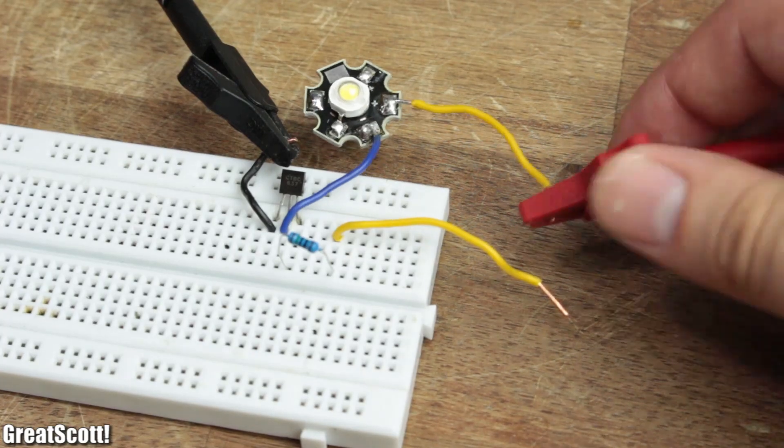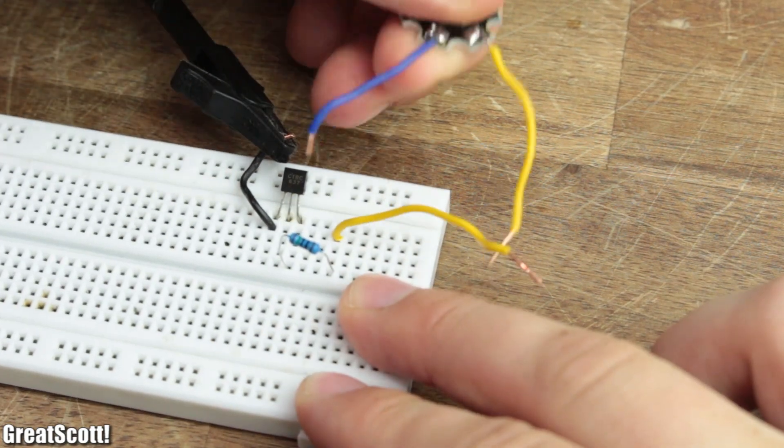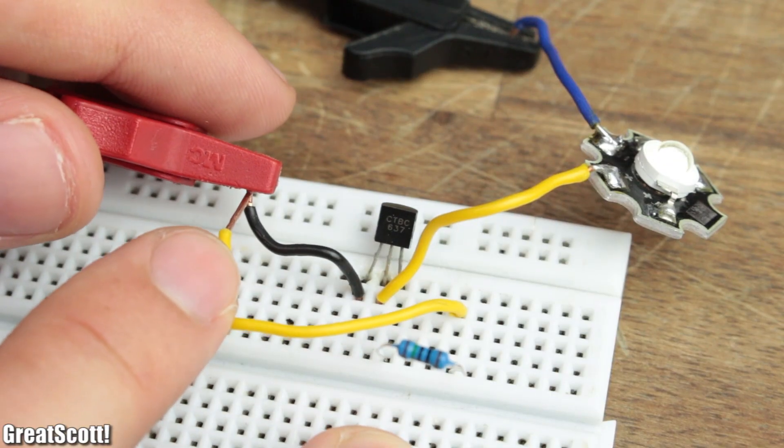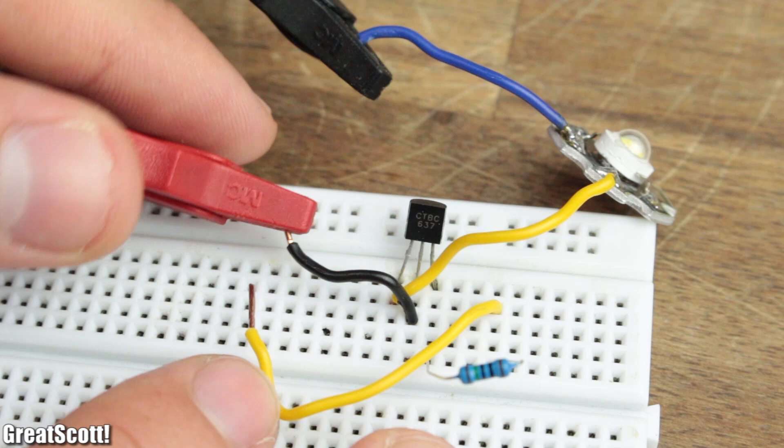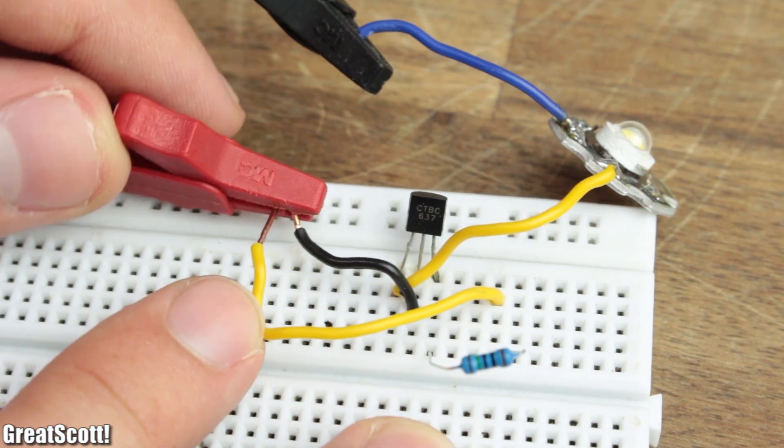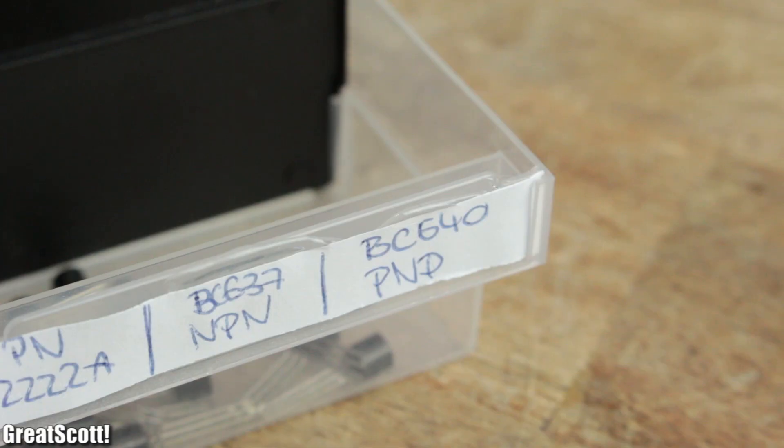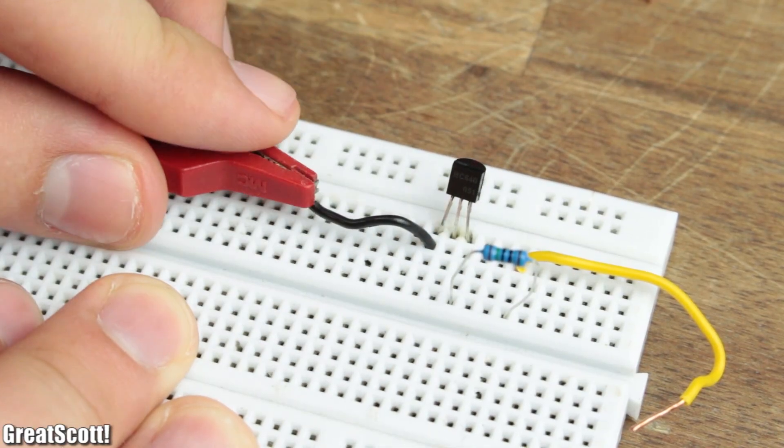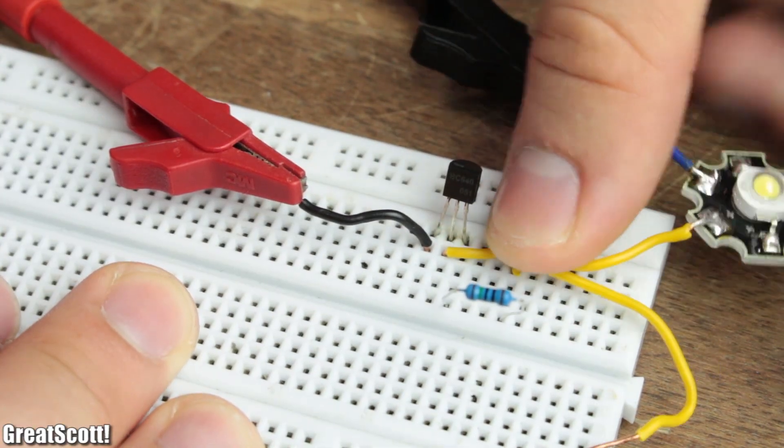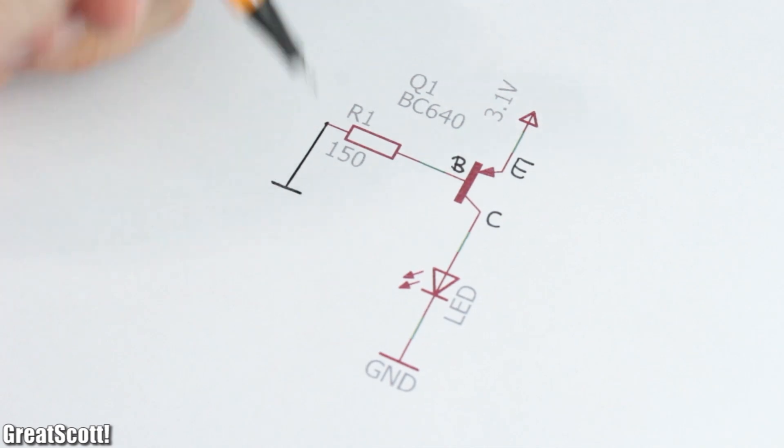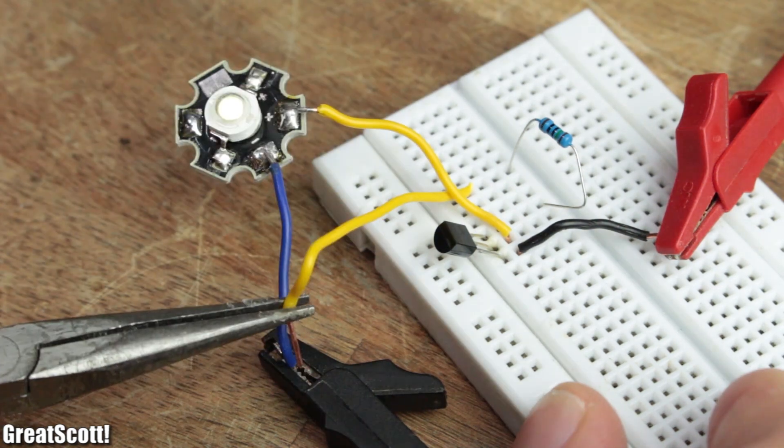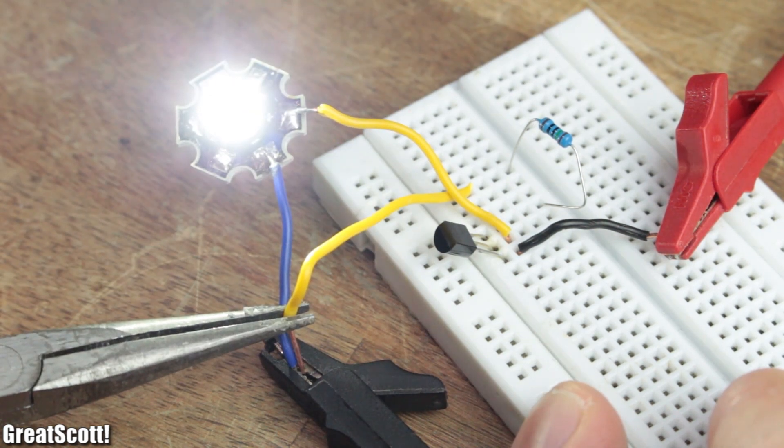But let's assume now that the load is not connected to the supply voltage but to ground instead. This way, the NPN transistor is not a decent choice for such a switching application. Thankfully though, there exists the PNP BJT, which is placed in the circuit similar to the NPN but has all of the polarities reversed. In a nutshell, that means that the ground potential needs to get applied to the base resistor in order to switch on the load instead of a positive voltage.